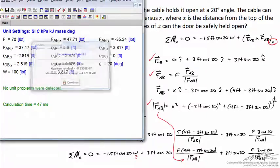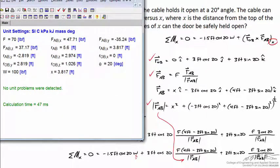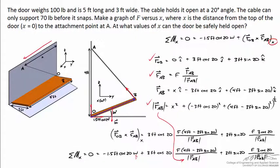So what this says is I could move point A away from the side of the door by a value of about 3.8 feet. If it's any longer than that, the rope would snap because it can only support 70 pounds.